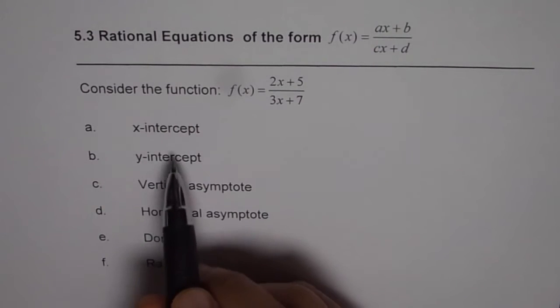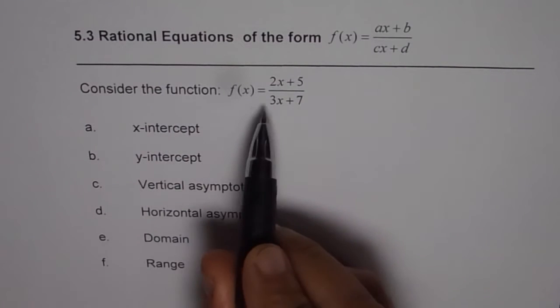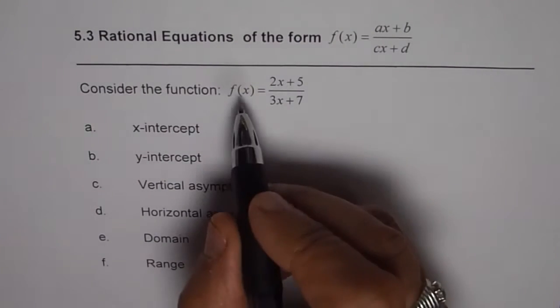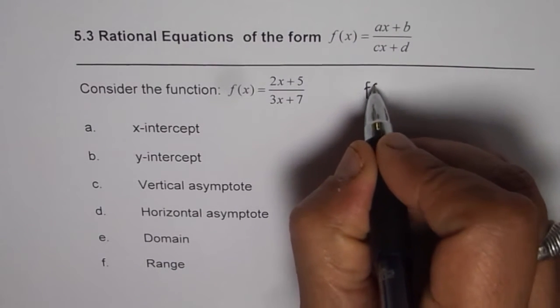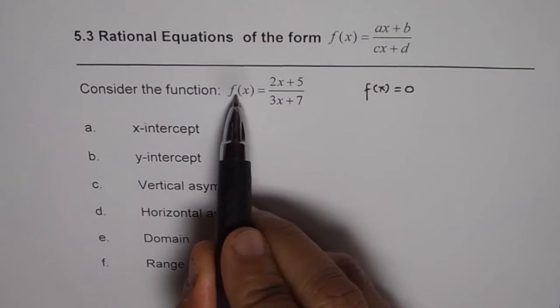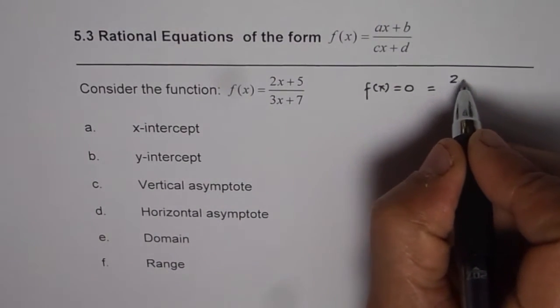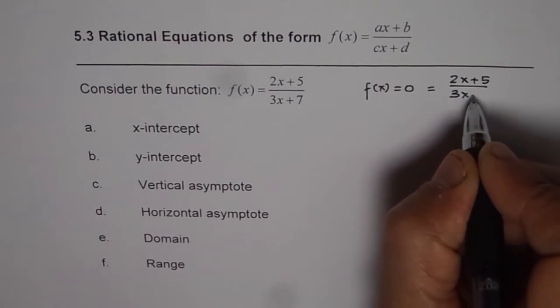Now what is x-intercept? X-intercept is a point where the graph of the function will cross the x-axis. So at that point, value of the function is 0. That means f of x is equal to 0. If I equate f of x as 0, what do I get? I get 0 equals to 2x plus 5 divided by 3x plus 7.